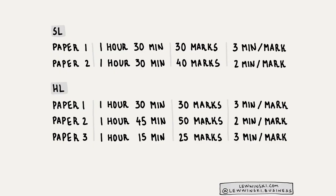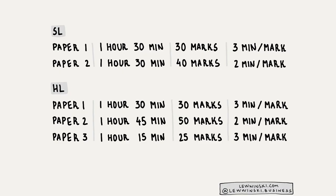For paper 2 standard level: one hour 30 minutes for 40 marks — spend two minutes per mark. For a six-point question that's 12 minutes; finish early and save time for the 10-point question. Higher level paper 1 is exactly the same as standard level — three minutes per mark. Paper 2 higher level is one hour 45 minutes for 50 marks — two minutes per mark. Paper 3 is one hour 15 minutes for 25 marks — three minutes per mark. For the 17-point question, allocate at least 40 minutes and finish the earlier questions faster.